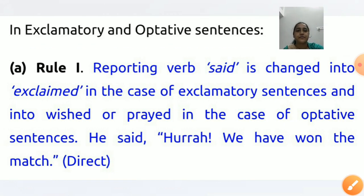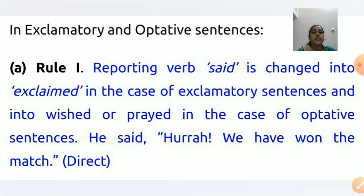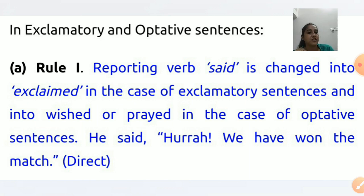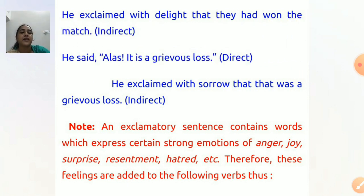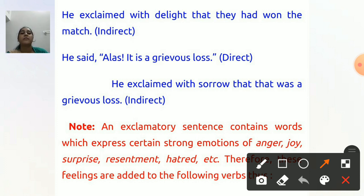In exclamatory and optative sentences, Rule 1 is: the reporting verb 'said' is changed into 'exclaimed'. Just as in interrogative sentences we changed 'said' to 'asked', and in imperative sentences we used 'requested', 'ordered', or 'commanded' — in exclamatory sentences 'said' changes to 'exclaimed'. For example: He said, 'Hurray! We won the match.' → He exclaimed with joy/delight that they had won the match.